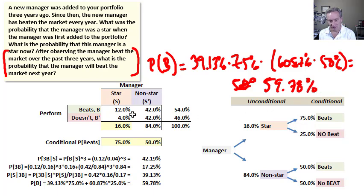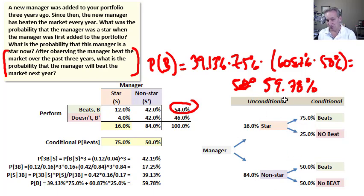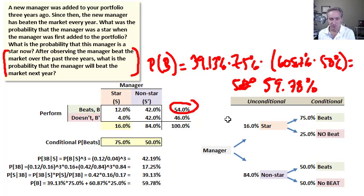Notice that the unconditional probability of beating the market was 54% for the overall mix of stars and non-stars. But after three years of outperformance, we have a right to a higher expectation — a higher probability this is a star manager — which increases the probability they'll beat the market next year to 59.78%. A really interesting problem, and I hope that's helpful. Thank you.